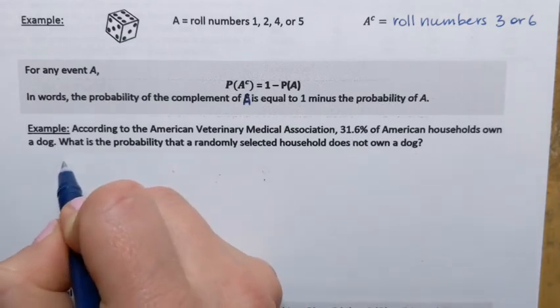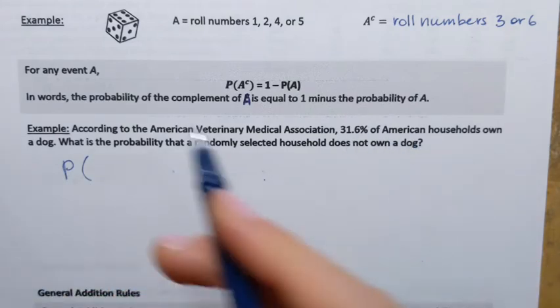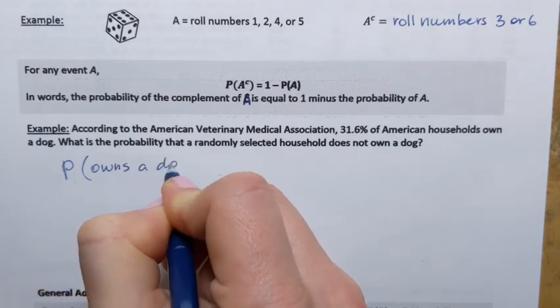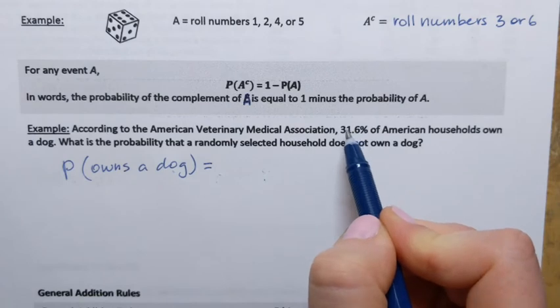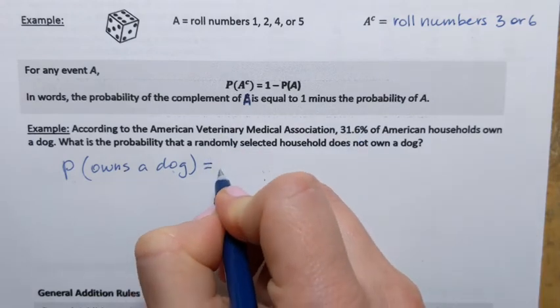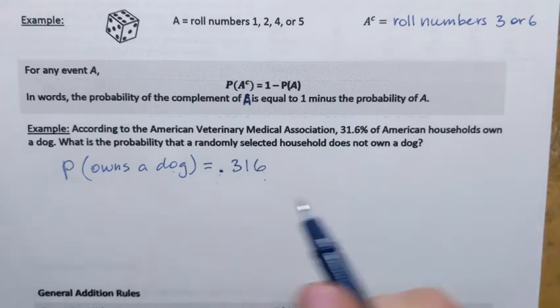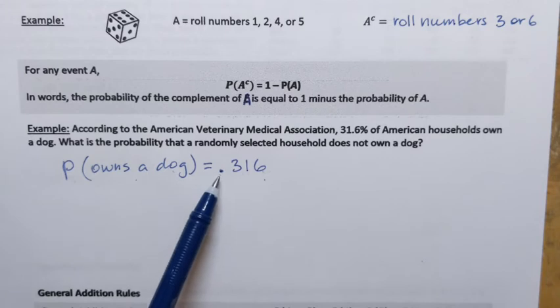It means that we can write down that probability that a randomly selected household owns a dog is that number, and the only thing I'm going to convert it to a decimal, is 0.316. Probability that household owns a dog is 0.316.